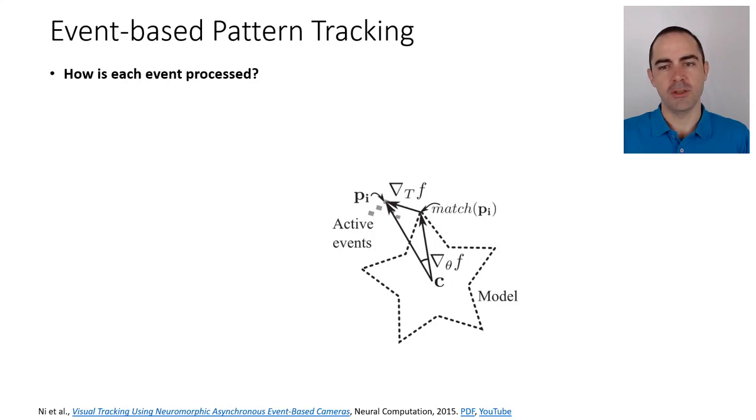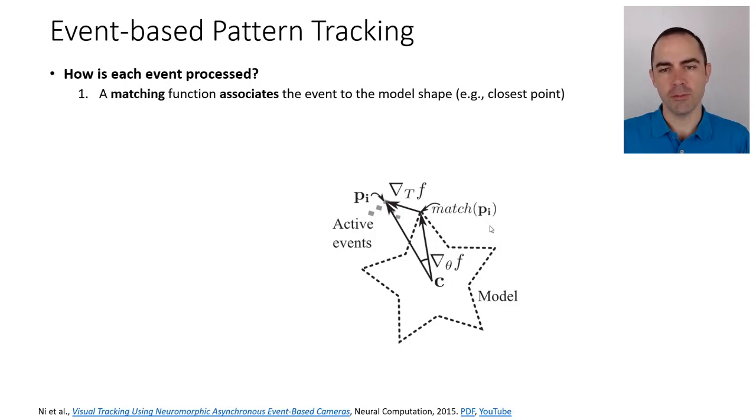How is each event processed in this type of pattern tracking algorithm? Remember the two key ingredients: one is data association and the other is the update rule. This is key ingredient number one. We need a matching function that associates the event to the model shape. We have the events and the model shape, and we have to say: this event that just arrived, to which point of the object model does it correspond? One of the simplest rules is by vicinity—we take this event and say, well, the closest point in the model, that's the point it corresponds to. Now we have associated this event with, for example, this corner of the star.